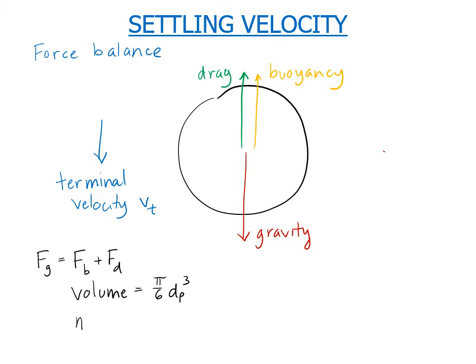And the mass of the particle is equal to the density times the volume. So it's equal to rho sub p, the density of the particle, times pi over 6 d sub p cubed.